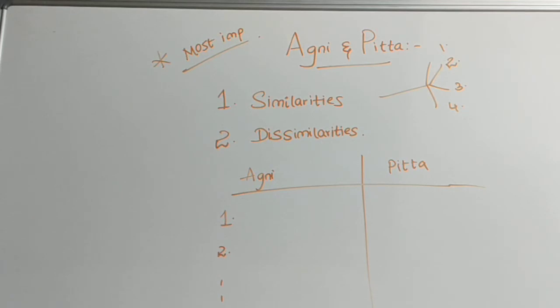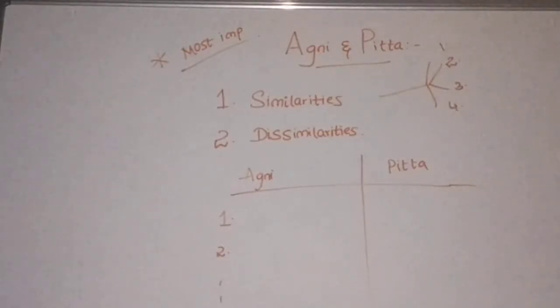Next, the eighth difference is, in the context of grahani, which is said by Charaka Acharya, you will find this in Charaka Samhita Chikitsa Sthana. Kshara amla katu dravya, if a person intakes, it will cause pitta vitiation. Kshara amla katu dravya will cause pitta vitiation, which leads to ajirna.